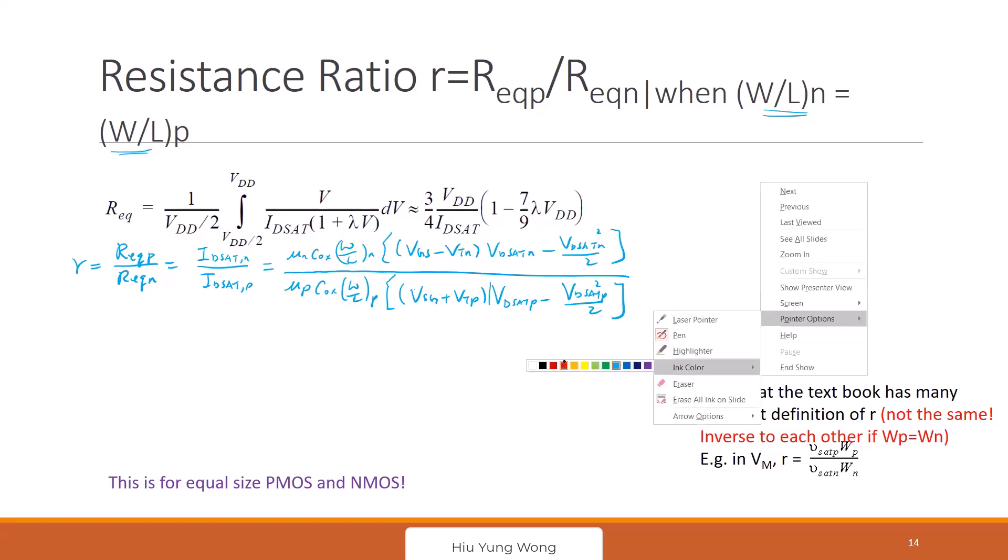So is this going to be different if the sizes are different? We can't use this equation to figure out, because this is my definition. I define a quantity called R, which is when they have the same size. I'm comparing the resistance of two transistors, NMOS and PMOS, when they have the same size. This is just the definition.